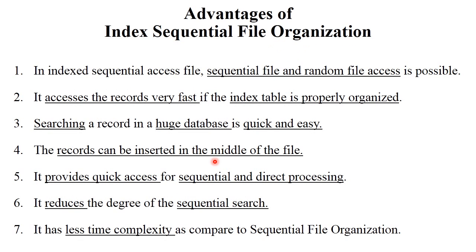Advantages of index sequential file organization: first, you can access the file sequentially or randomly — random file access is also possible. It accesses records very fast if the index table is properly organized. Searching records in a huge database is very quick and easy. Records can also be inserted in the middle of the file, which is not possible in sequential file organization. It provides quick access for both sequential and direct processing, reduces the degree of sequential search, and has less time complexity compared to sequential file organization.